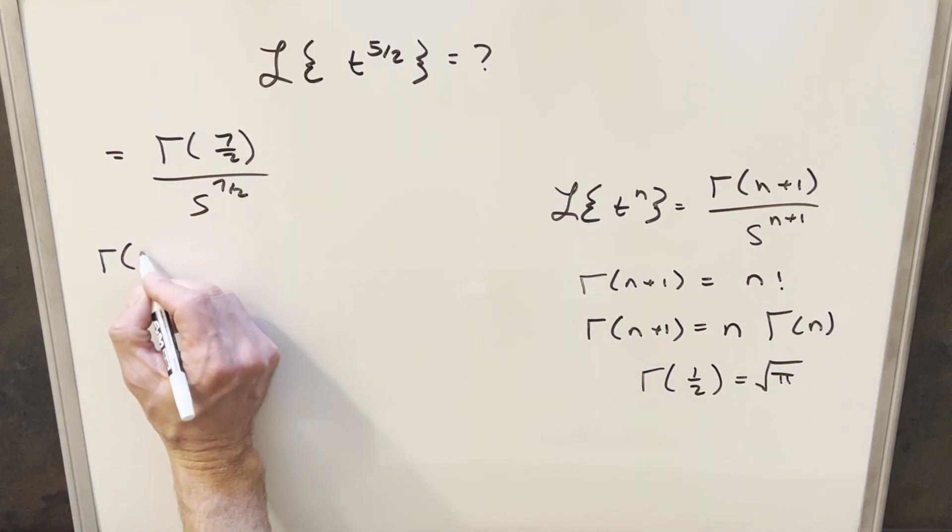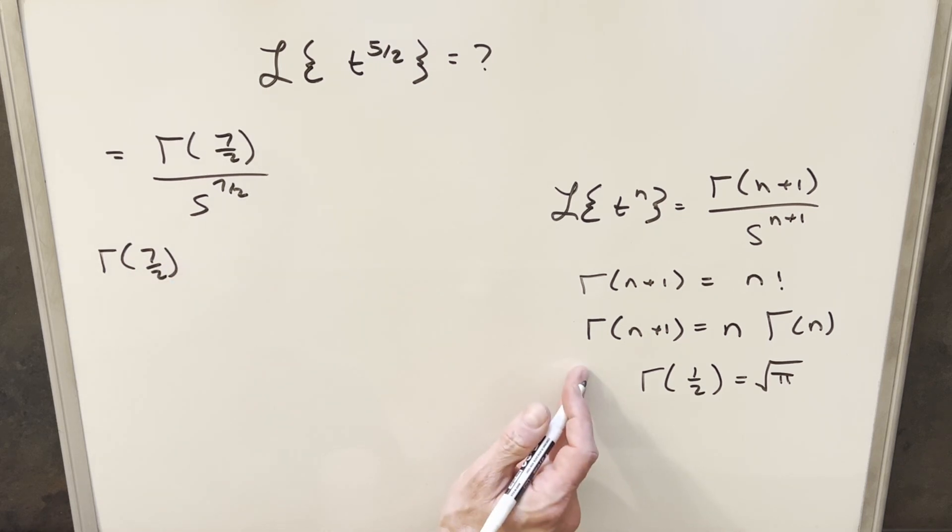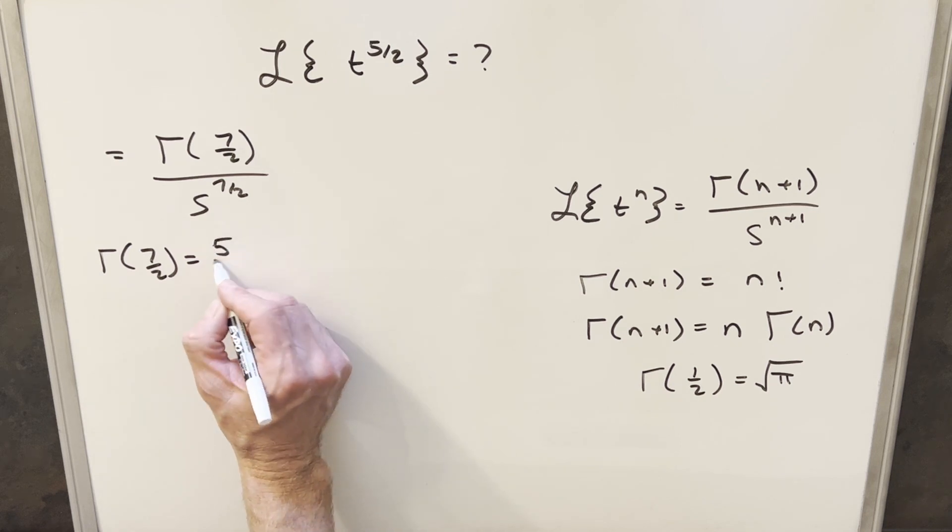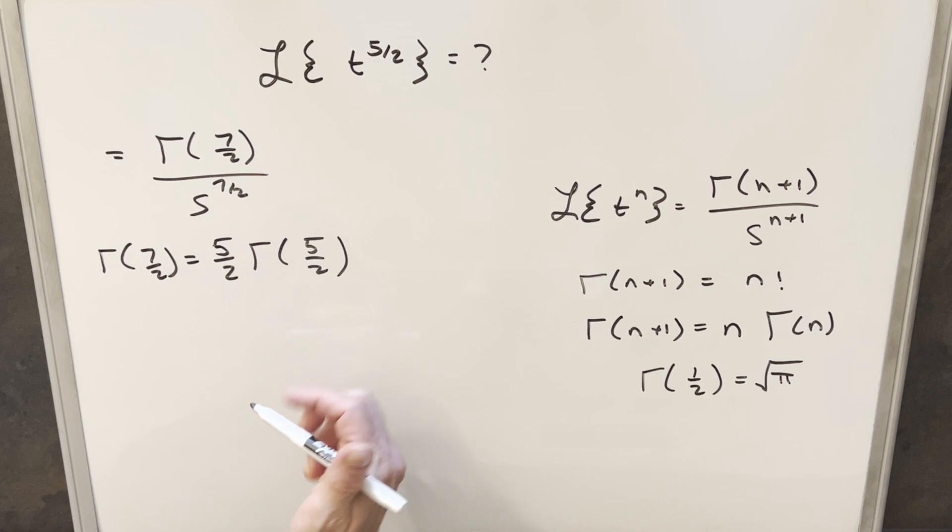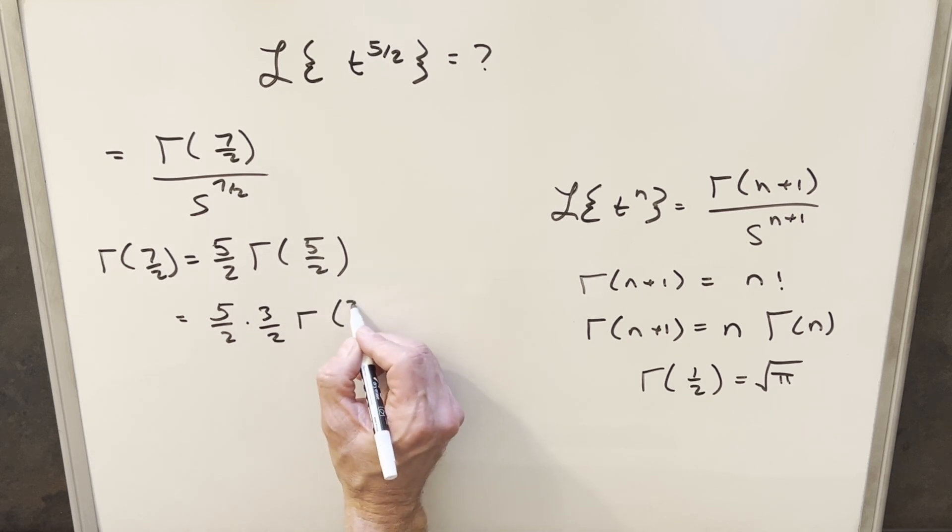So for gamma of 7 halves, using this one, we can just reduce it by 1. So we can say this is the same thing as 5 halves times gamma of 5 halves. But then what we can do is just use this repeatedly. So we'll bring in our 5 halves, we do this same thing again, and then we have 3 halves times gamma of 3 halves.